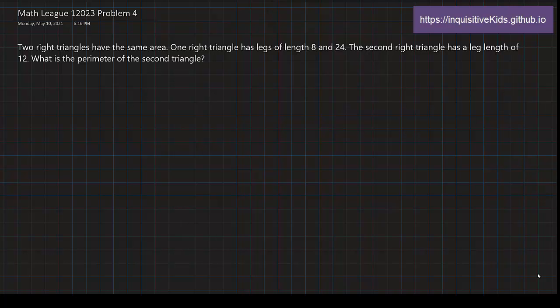This is going to require multiple steps. First, we need to re-read the problem and collect the information. Two right triangles have the same area. We need to note that there are two right triangles with the same area. One right triangle has legs of length 8 and 24, and the second right triangle has a leg length of 12. Now we're being asked, what is the perimeter of the second triangle?